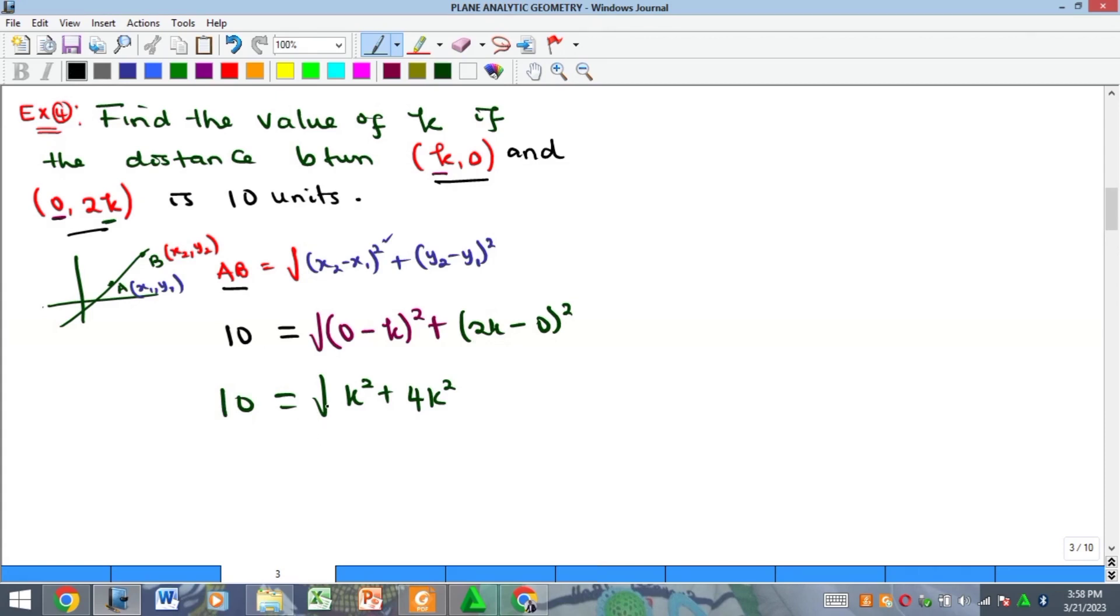So if we return this square root to this side, we are going to have 10 squared is equal to k squared plus 4k squared, which will give us 5k squared. And when you square that 10, you will have 100, and that is equal to 5k squared. And of course, when you divide both sides by 5, you are going to have 20 is equal to k squared.